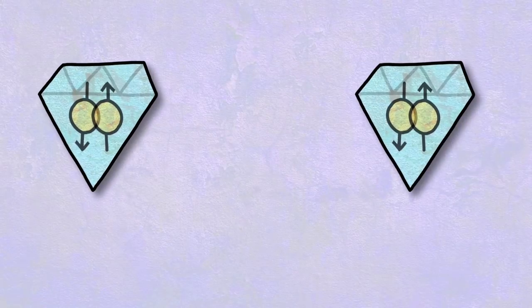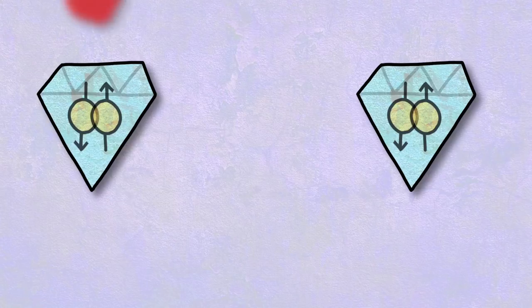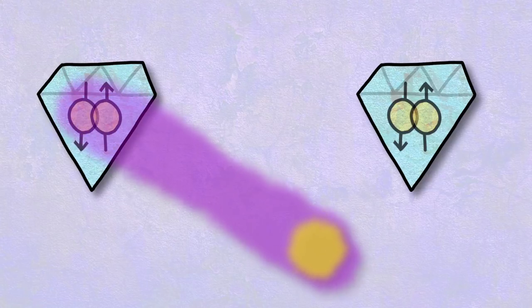We reset two of our diamonds into this superposition and then shine a laser pulse on them. This can make them emit a photon, a light particle, which is quantum entangled with the electron.